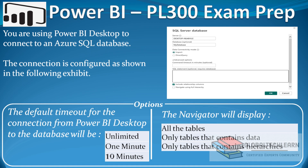The question is: you are using Power BI desktop to connect to an Azure SQL database. The connection is configured as shown in the following exhibit, and in the exhibit on the right side we can see that from Power BI desktop we need to connect to a SQL server database with all settings as default. We have two questions to answer.